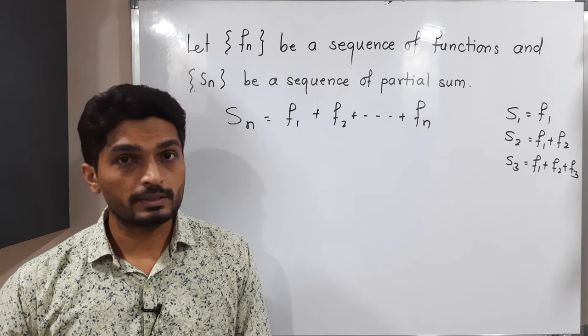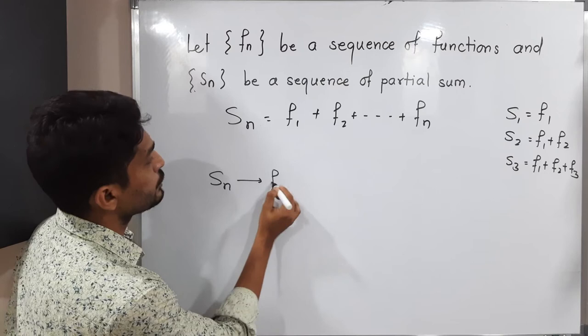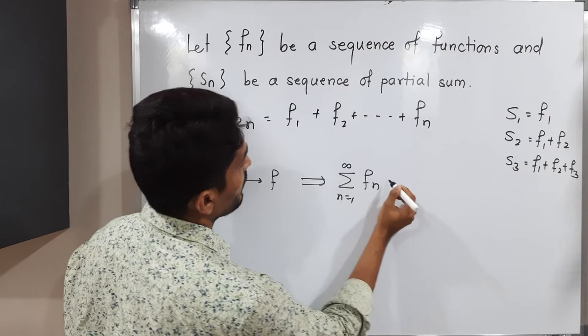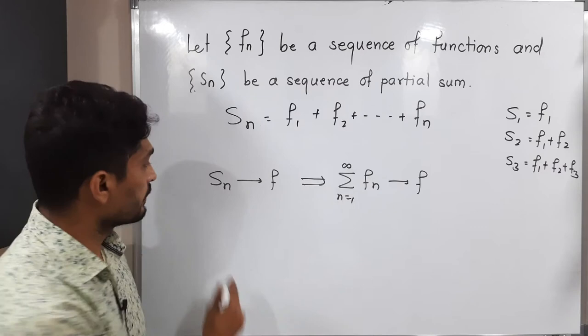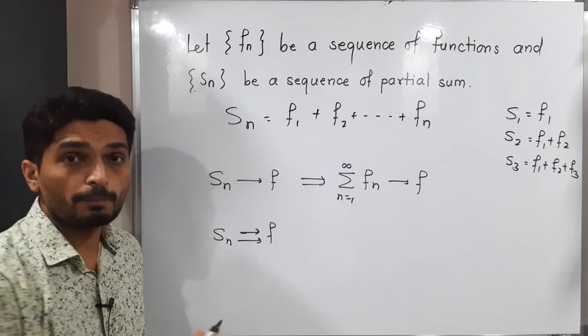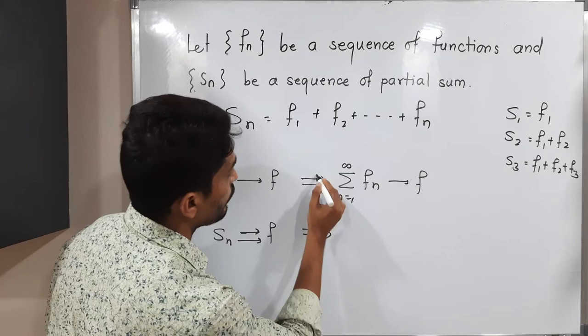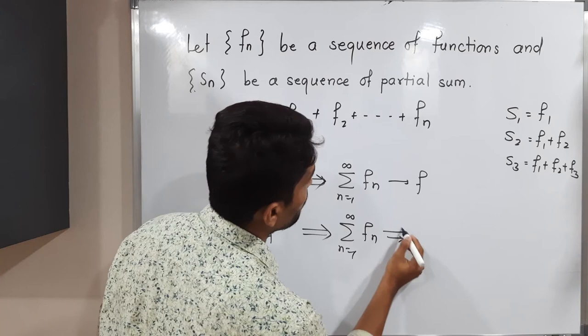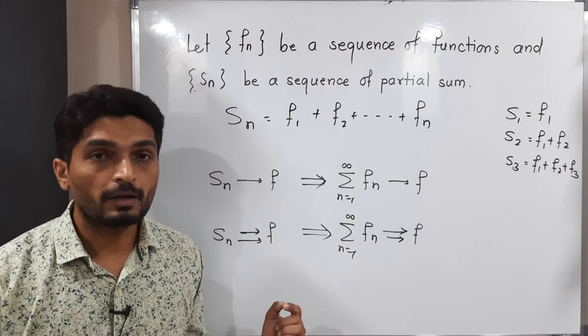If this sequence of partial sums sn is convergent and converges to f, then we say our series — summation fn from n=1 to infinity — is also convergent and converges to the same function f. If this convergence is uniform, meaning sn converges to f uniformly, then our series also converges to f uniformly. So with the help of the sequence of partial sums, we find the convergence of the series of functions.